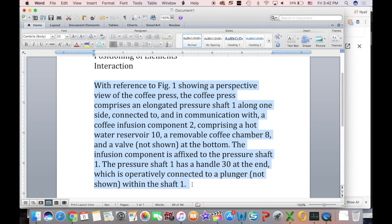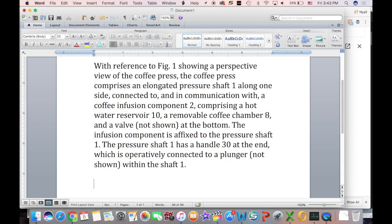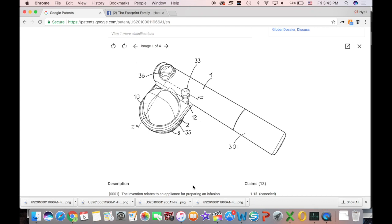Okay, now you can see we have the first paragraph here. And what we're doing is describing, first of all, identifying the figure. Secondly, we're describing the major components. So we have the pressure shaft here. I didn't call it a plunger because the plunger is what is within the pressure shaft. So we could just call it pressure shaft. And the coffee infusion component consists of these three major components. Now in the next paragraph, we're going to be looking at breaking down those larger components into more detail.